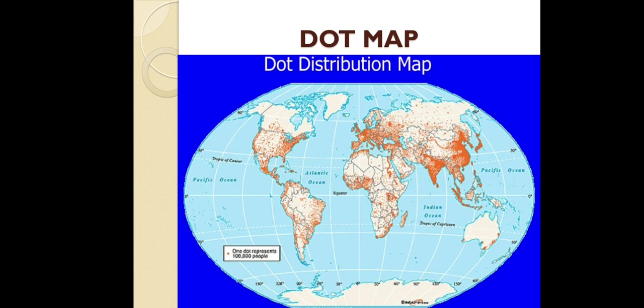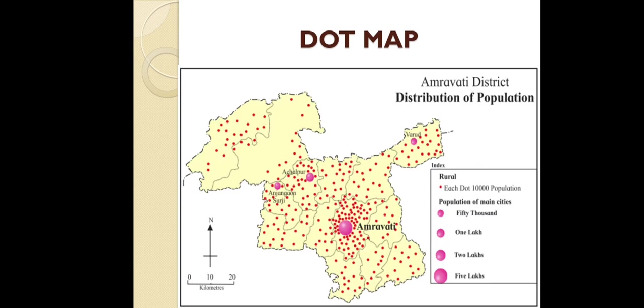Next is the dot map, which is a quantitative map. In a dot map, dot symbols are used to represent the amount of data. For example, population is shown through dots. An example showing Amravati district depicts the distribution of population using different types of dots, where each dot represents a different type of population.